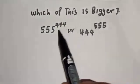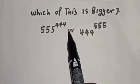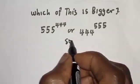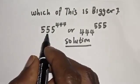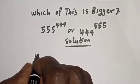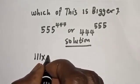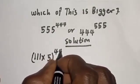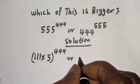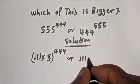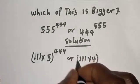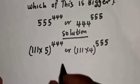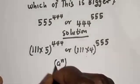Which of these is bigger: 555 raised to the power 444, or 444 raised to the power 555? The solution: 555 raised to power 444 can be written as 111 multiplied by 5, all raised to power 444. Similarly, 444 can be written as 111 multiplied by 4, raised to power 555. Take note of this rule: